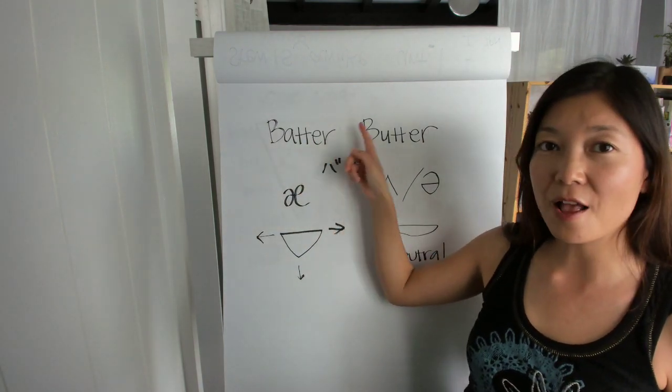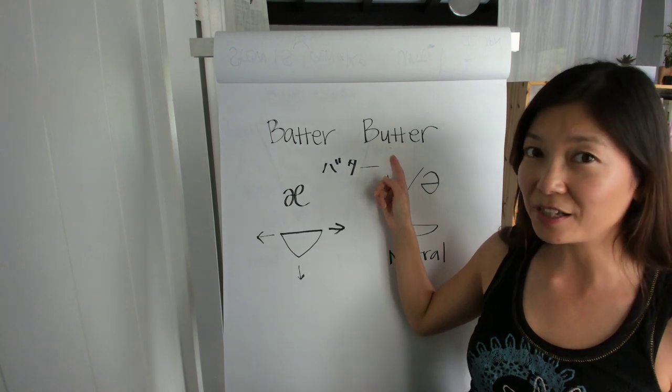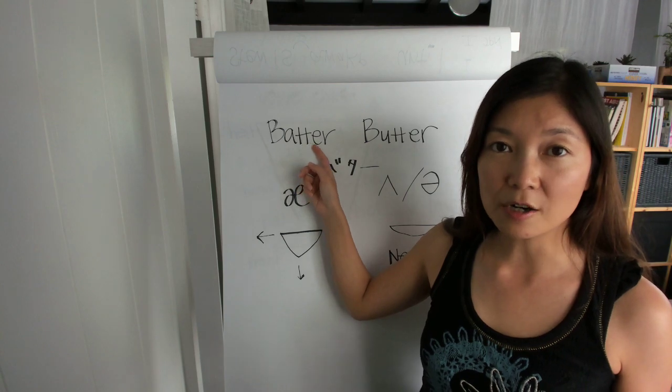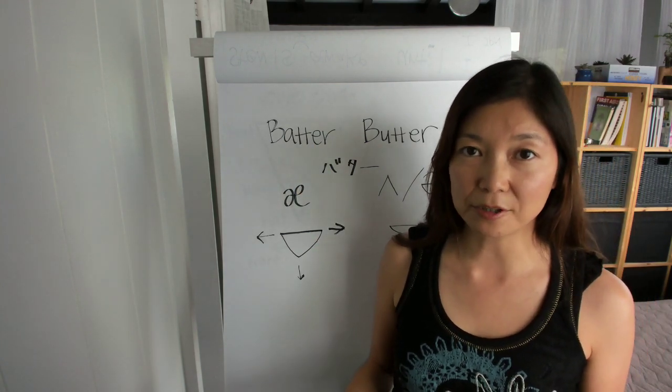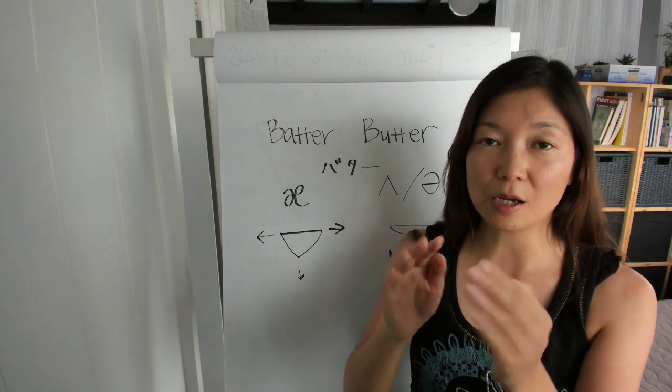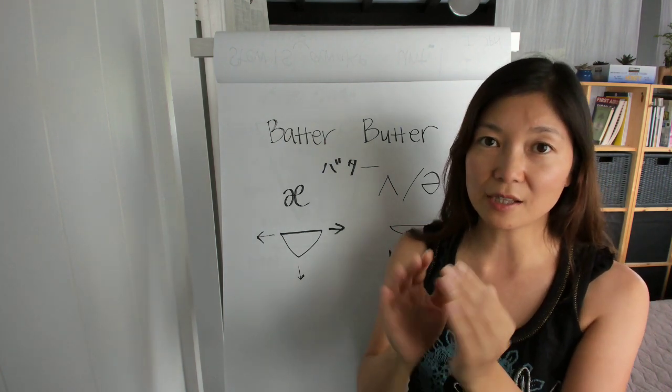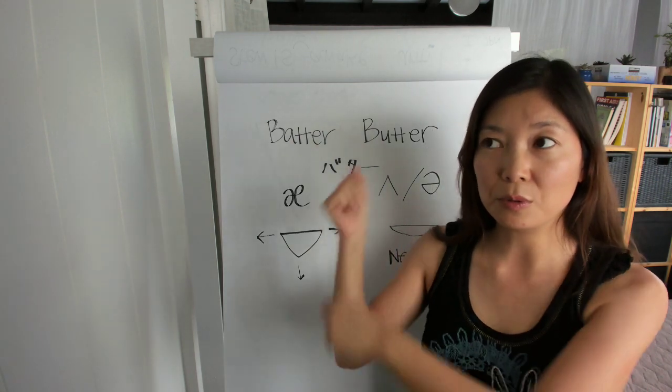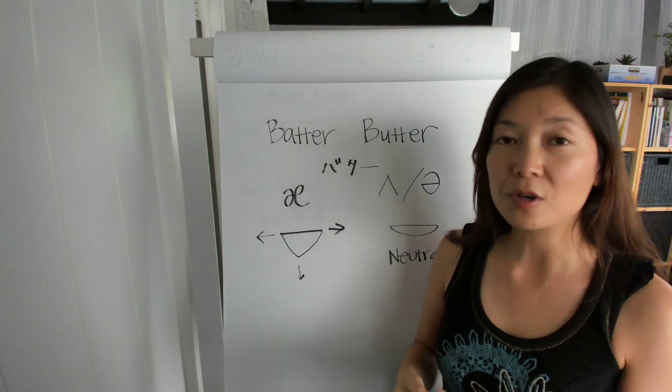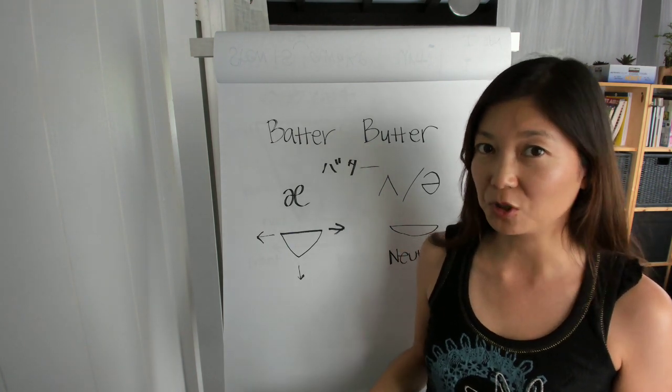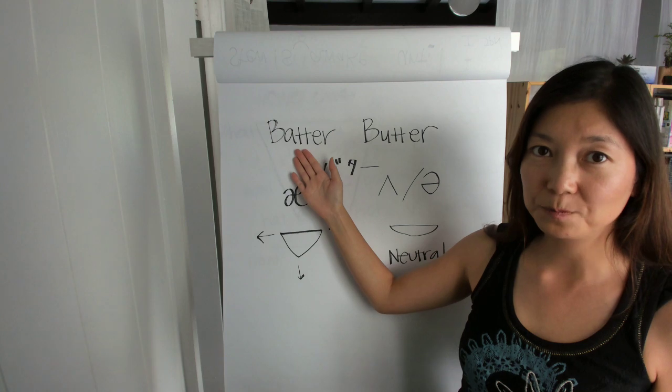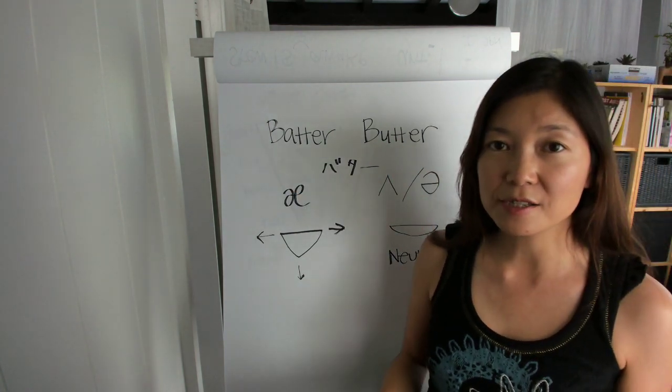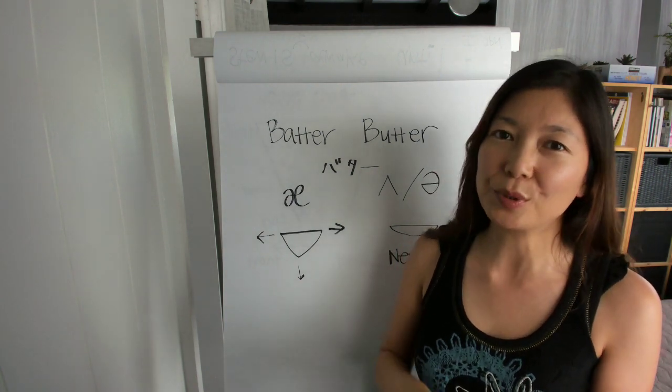Okay, so this one, B-A-T-T-E-R, this is like tempura batter, the stuff that you put around the tempura when you make it. That's called batter. Also in baseball, the person who bats is called a batter. So it's the same word. And butter, B-U-T-T-E-R, this is made of milk and that's the stuff that you put on bread.